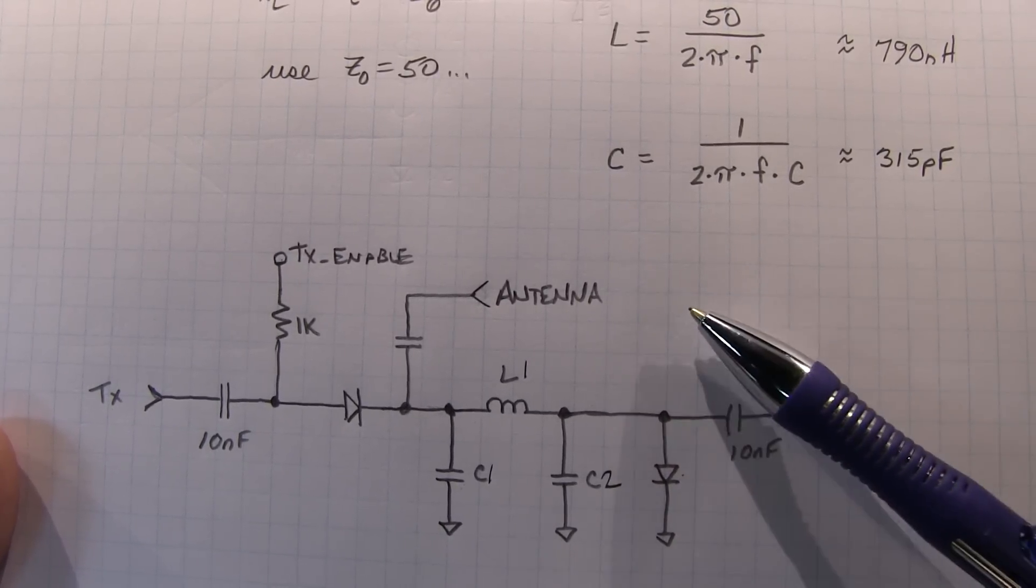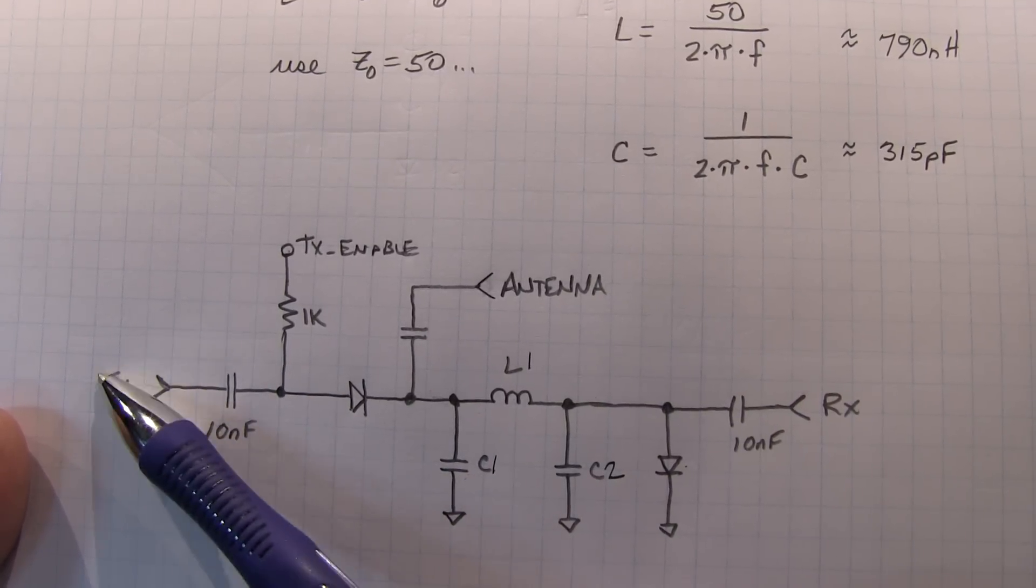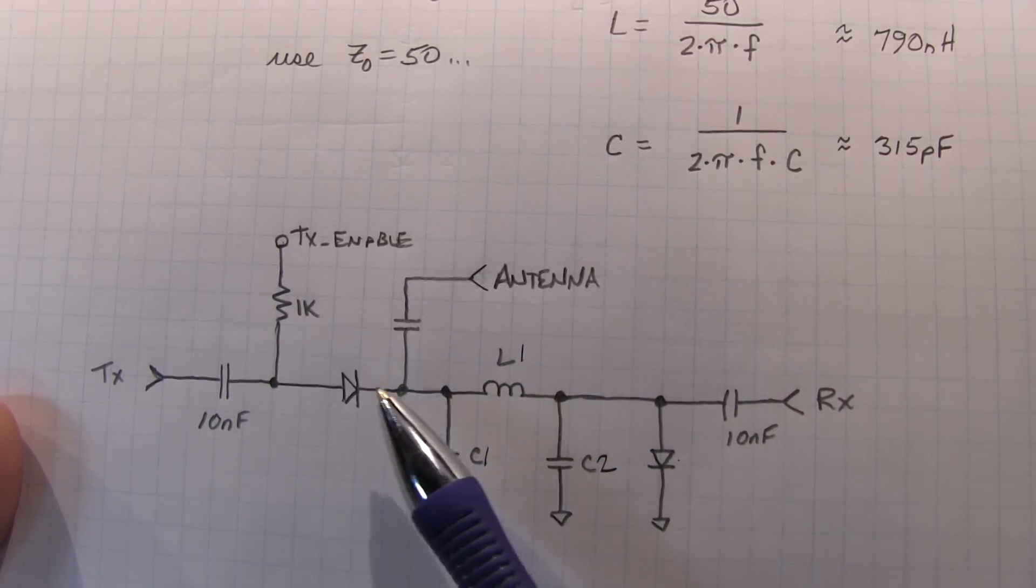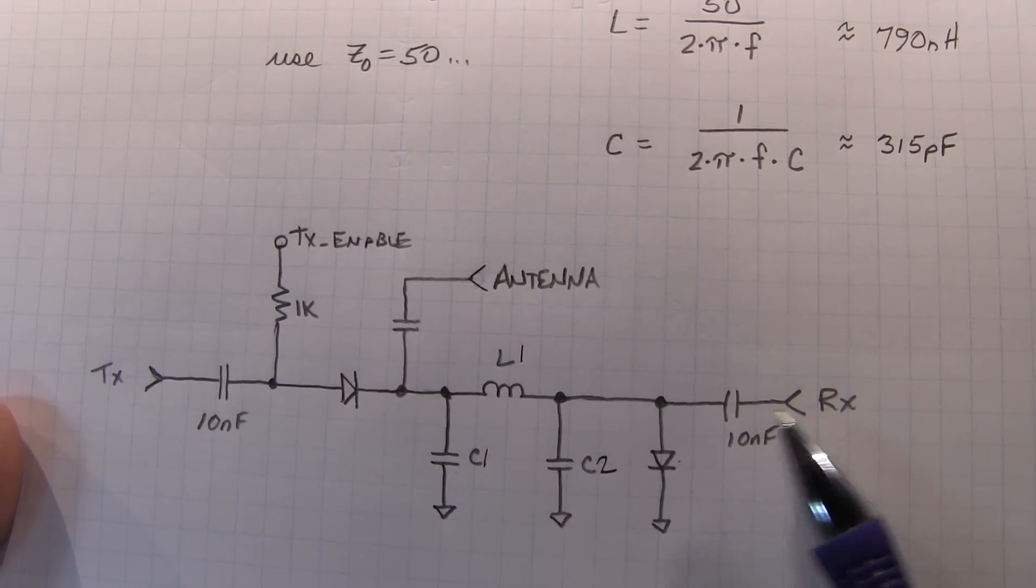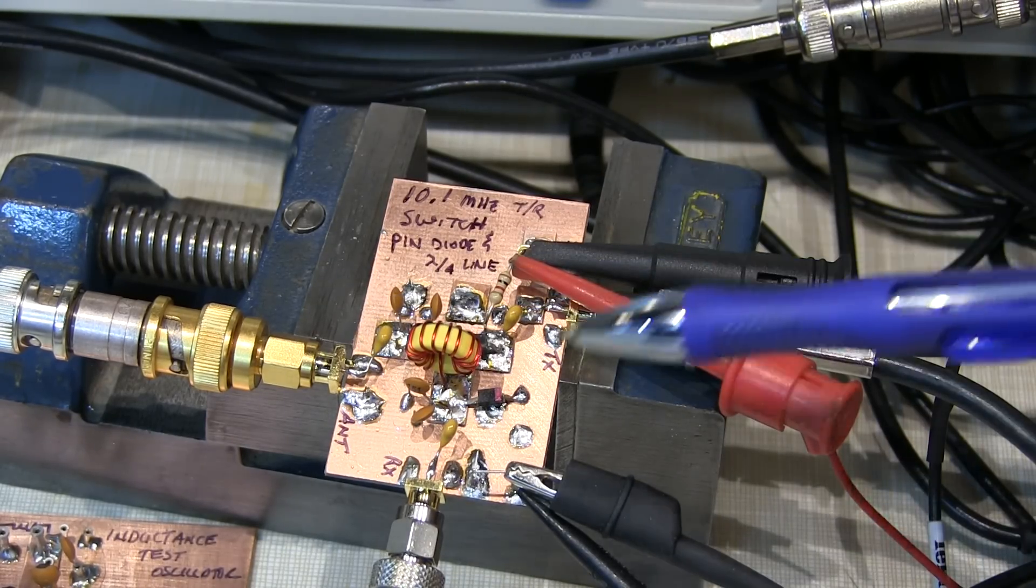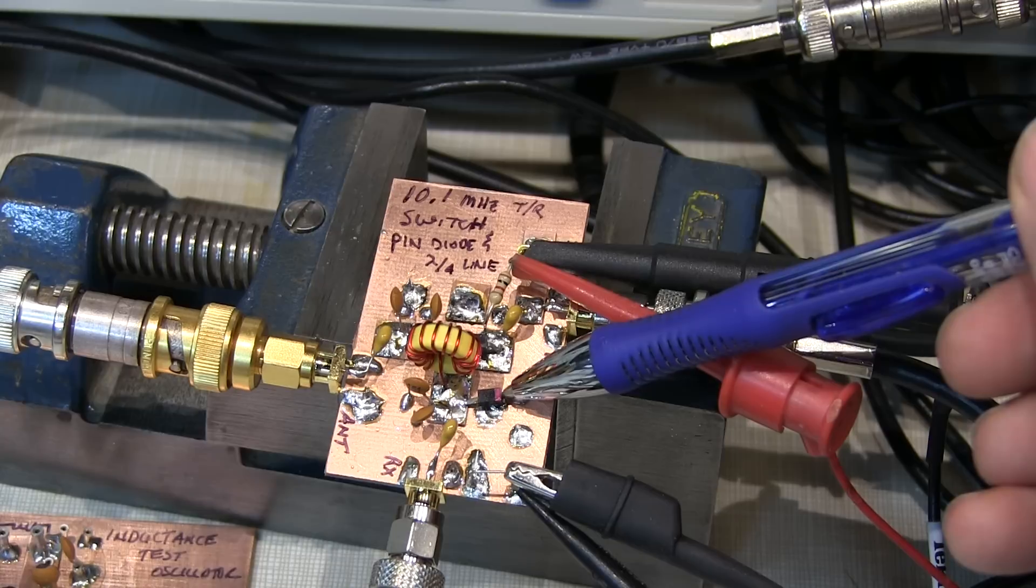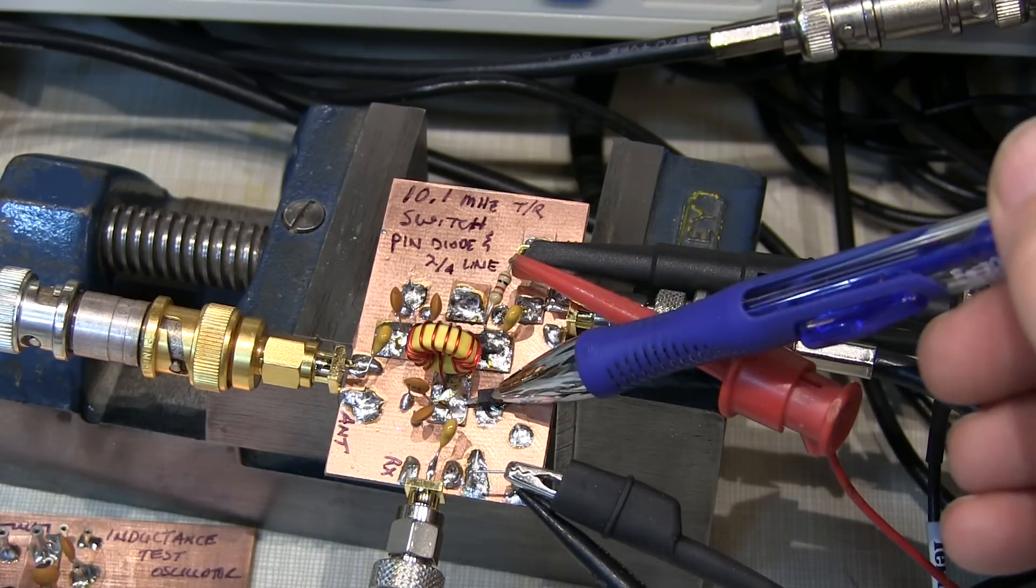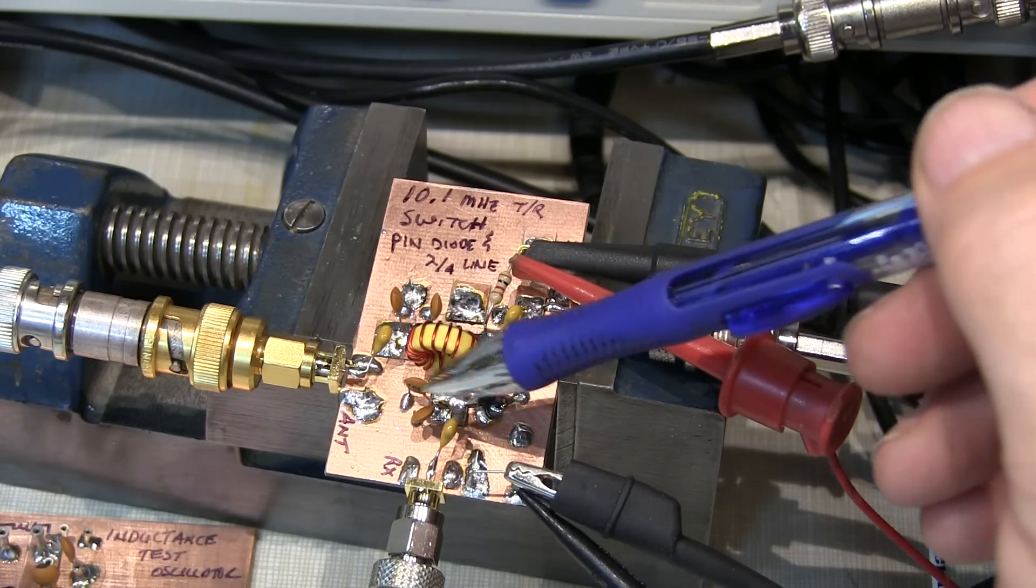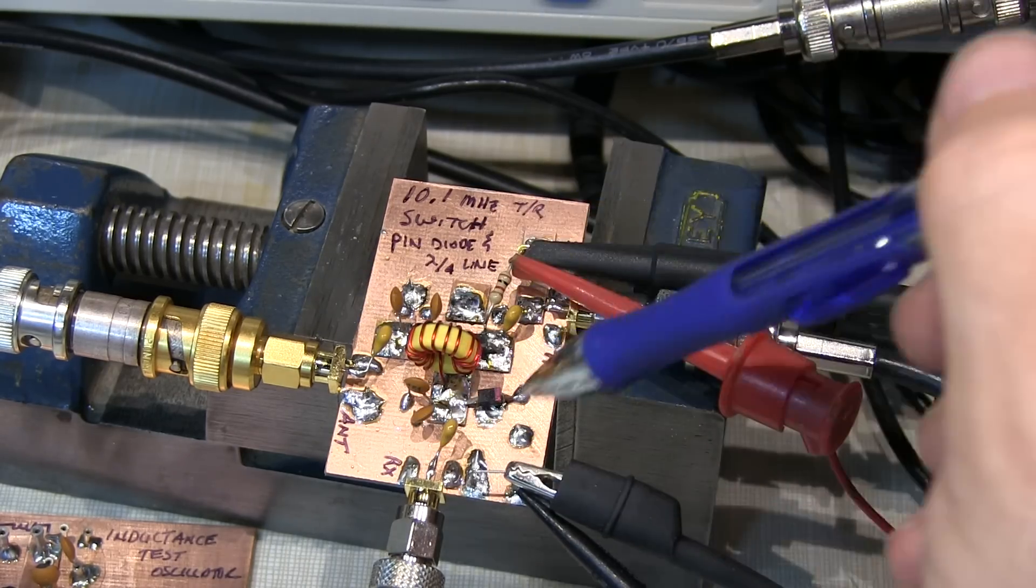So to kind of prove how this works, I'm just using it in the reverse direction. I've got a signal generator connected at the antenna port here, and I've got the scope channels connected to the transmit and receive ports. So by adjusting the DC bias on the transmit enable, we'll be able to see the signal that's coming in here switch from one port to the other. Alright, so this is my little breadboard here. This is the antenna port, the transmit port, and the receive port. My DC bias is being applied here through this 1K resistor. This guy right here and this guy back here you might not be able to see are the two pin diodes. And then this is the 790 nanohenry inductor that I hand wound, and then a couple of capacitors to make up to 300 or so picofarads of capacitance on either side of that. And a couple of AC coupling caps to bring the signals through this switch.